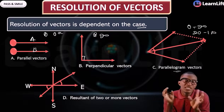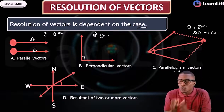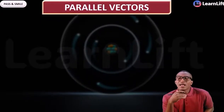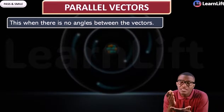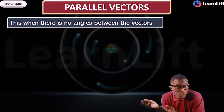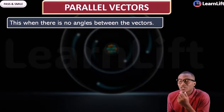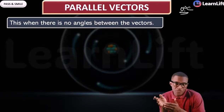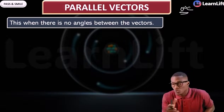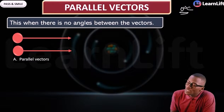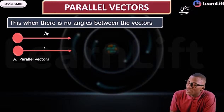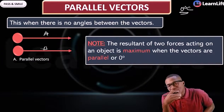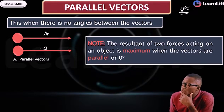In this class, we will just focus on parallel vectors and cover past questions as we go. Parallel vectors are vectors in which there is no angle between them. When there is no angle, the angle is zero degrees, and the vectors are said to be parallel. This is a constant past question topic. If vector A and vector B are parallel, it is because there is no angle between them.